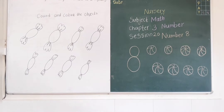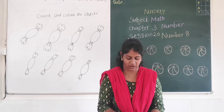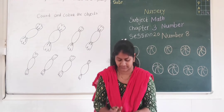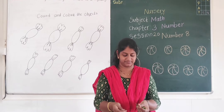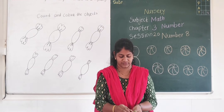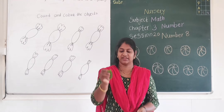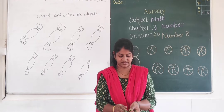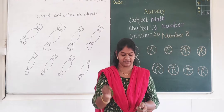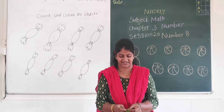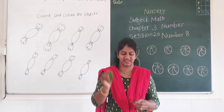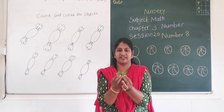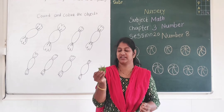Now, these are leaves. How many leaves are here? Let's count: 1, 2, 3, 4, 5, 6, 7, 8. How many leaves are here? 8. 8 leaves.